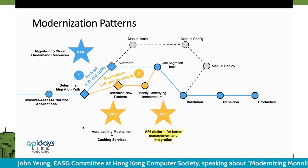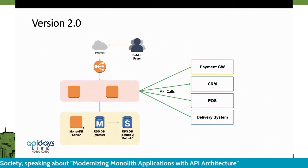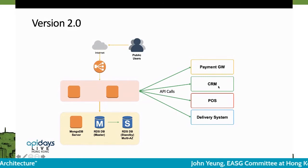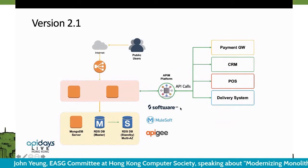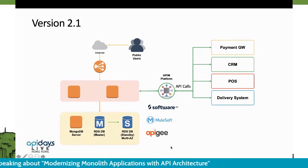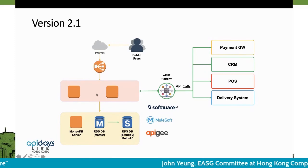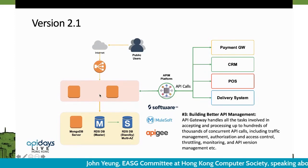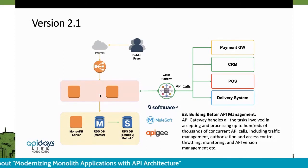Then we start the version 2.1 journey, which is building the API platform. The application integrates with many external systems like the payment gateway, CRM, and POS. In order to manage all this traffic and have standardization on API management, we introduce the API platform. All API calls would be routed through this platform to the applications. By this way, we manage our APIs in a centralized model in order to have traffic management, authentication, and access control to improve security level and service level.